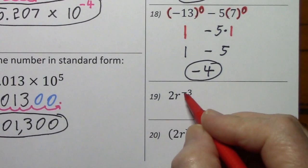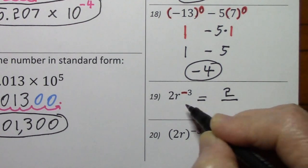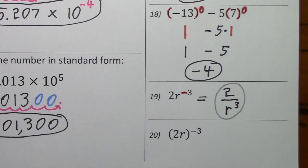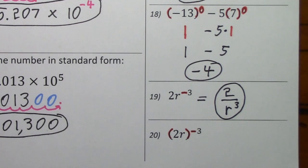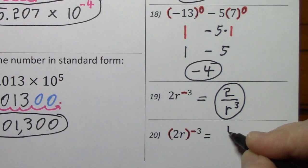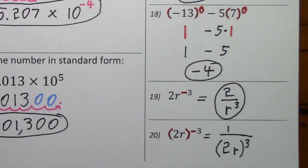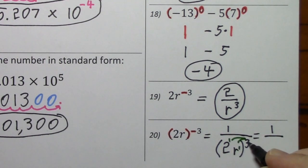Looking at 19: we've got a negative exponent. So the 2 stays in the numerator, r to the negative third moves to the denominator and becomes r to the positive third. Looking at 20: the negative exponent applies to the parentheses, so we have one over two r to the positive third — it's positive now that it's in the denominator. Here we can use the power rule and multiply each exponent: that's two to the first, r to the first — giving us one over two to the third, which is 8, and r to the third.